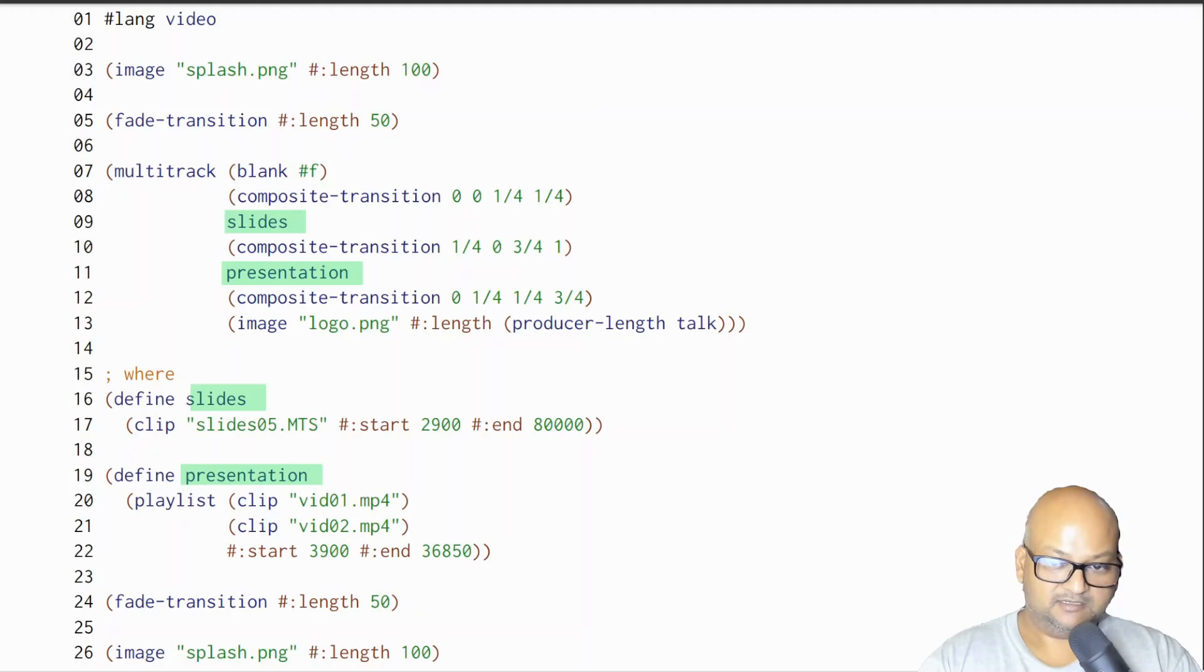This first line, hash lang video, is typical racket speak for the following script is written in the language video. And as you read the rest of the script, the striking thing is that it's pretty self-explanatory. For example, we start with an image of a splash page which might be the conference logo. We then transition using a fade into a multi-track video.